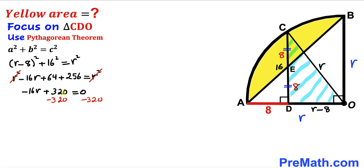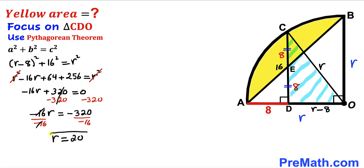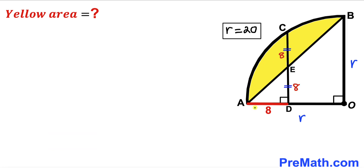Subtracting 320 from both sides gives −16r = −320. Dividing both sides by −16, our radius r turns out to be 20 units. So the radius of the quarter circle AO is 20 units, and likewise OB is 20 units as well.